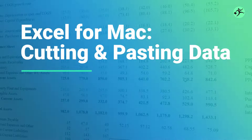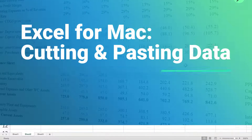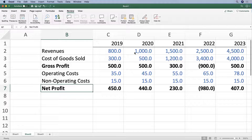We've been looking at only Control+C, which is copy, but we can also cut instead of copying.